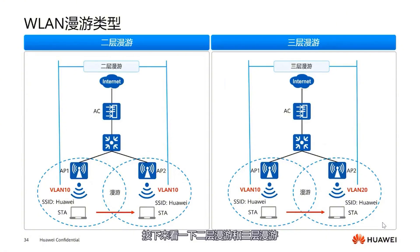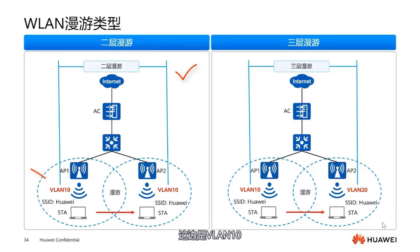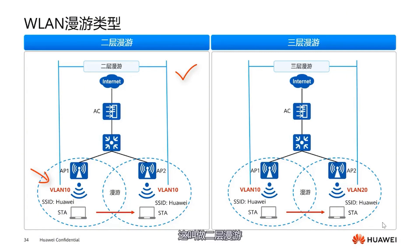Moving on to Layer 2 and Layer 3 roaming — what does Layer 2 roaming mean? It is based on VLANs. Typically, VLAN 10 and VLAN 20 are different networks. But with Layer 2 roaming, both networks are in the same subnet. In AP1 it is 10.1, in AP2 it is 10.2 — they are different APs but in the same subnet. This is called Layer 2 roaming; there is no need to cross subnets.